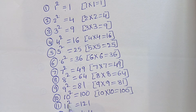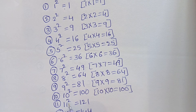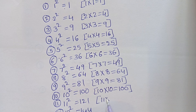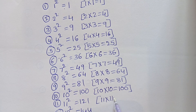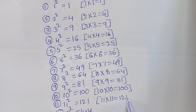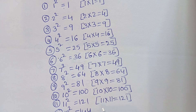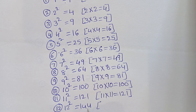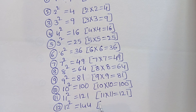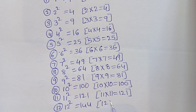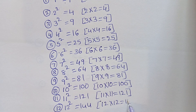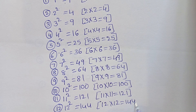Eleven square equals to one twenty-one. Eleven into eleven equals to one twenty-one. Twelve square equals to one hundred forty-four. Twelve into twelve equals to one forty-four.